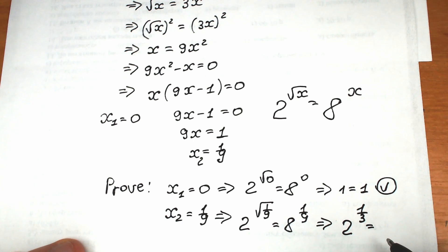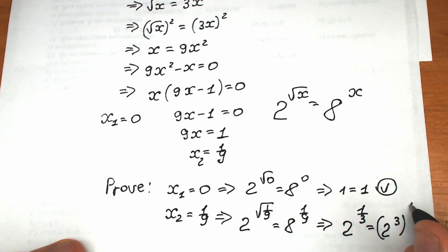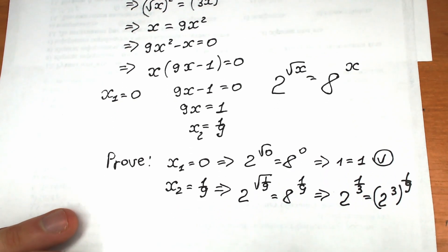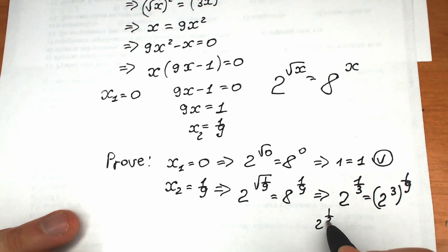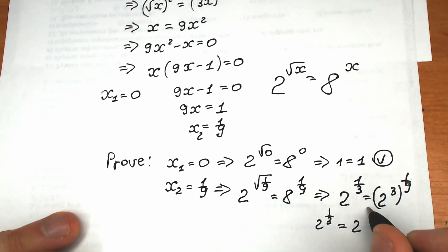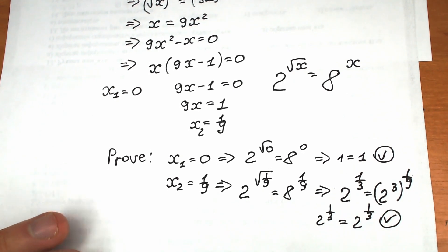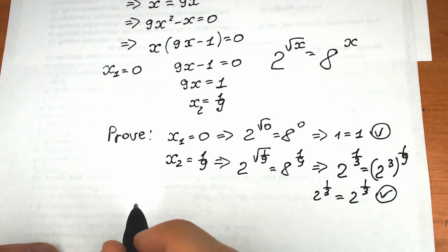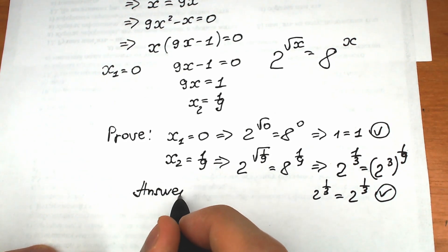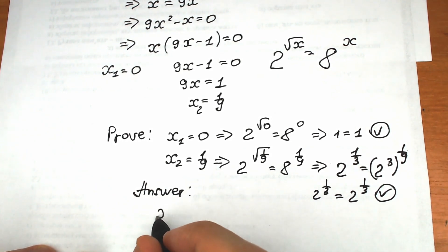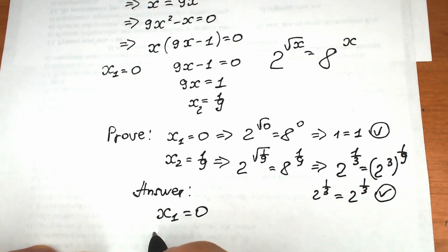We can write the right side as 2 cubed raised to the power 1/9, which gives 2 to the power 3 times 1/9 equals 2 to the power 1/3. So the left side equals the right side — this is a correct solution as well. Our final answer: x₁ equals zero and x₂ equals 1 over 9.